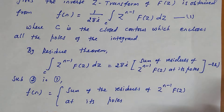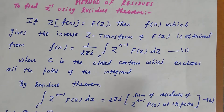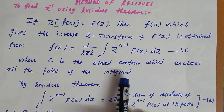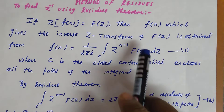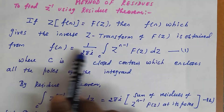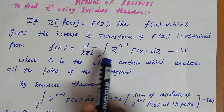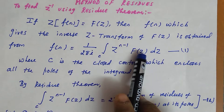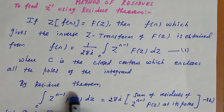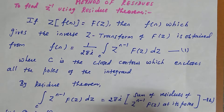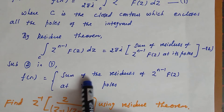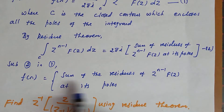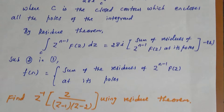This is the procedure we are going to follow — it is very simple. First, we take whatever is given inside the bracket of Z-inverse as our F(z), the same way we used in the partial fraction method. Then we form the equation F(n) = (1/2πi) ∮_C z^(n-1) F(z) dz. After substituting, the 2πi terms cancel, giving the final answer: F(n) = sum of residues of z^(n-1) F(z) at its poles.